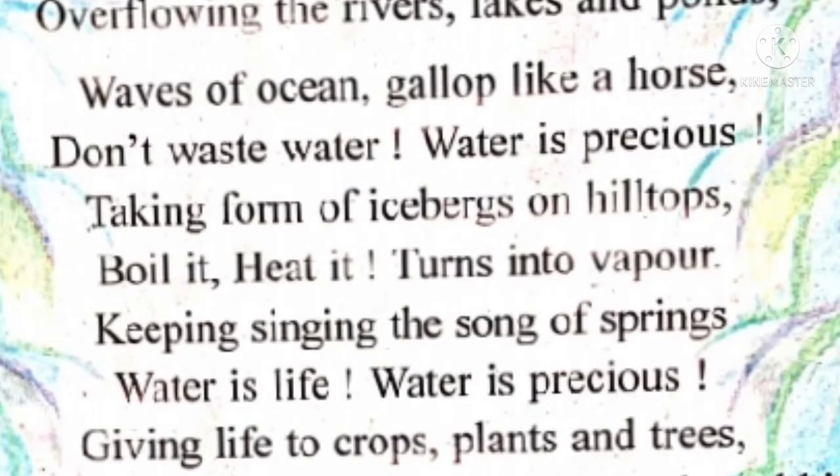Waves of ocean gallop like a horse. So waves means paani ki lahirein. Ocean means saamundra. Gallop means saar pat teez se, like a horse. Jaise horse teez se run karta hai, waaise saamundra ki lahirein dikhaayi deti hain.